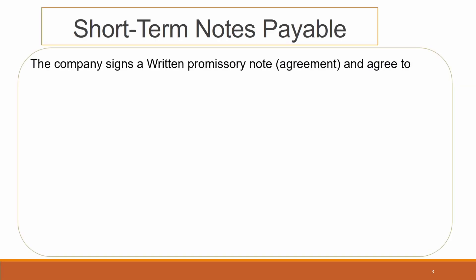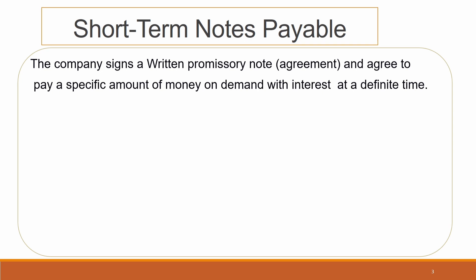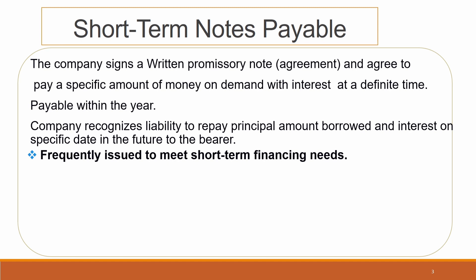In other words, the company signs a written promissory note or agreement and agrees to pay a specific amount of money on demand with interest at a definite time, and short-term notes payable must be paid within the year. The company recognizes a liability to repay the principal amount borrowed and interest on a specific date in the future to the bearer.